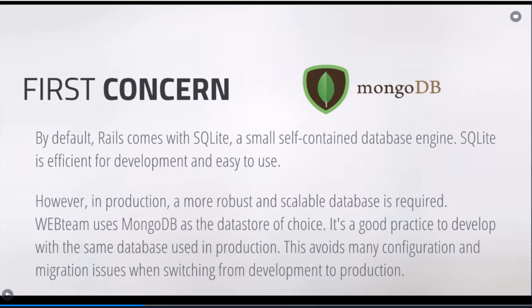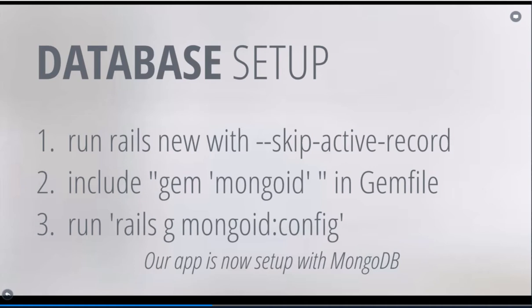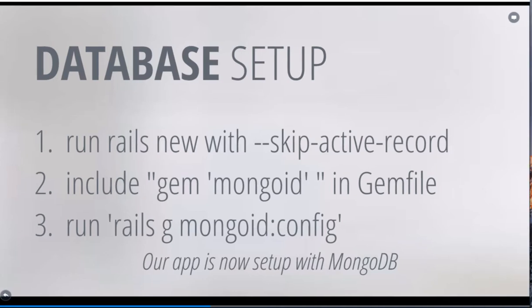Rails uses SQLite as the default database, which is great for development. But we're going to be using MongoDB in production, so we want to develop with the same database we're using in production — it's easier to deploy if both environments match. To set up the database, when I run rails new I'll use --skip-active-record, then include gem 'mongoid' in the Gemfile, run bundle install, and then run the configuration: rails generate mongoid:config. That configures the mongoid generator to set everything up, and with these steps we're ready to use MongoDB.